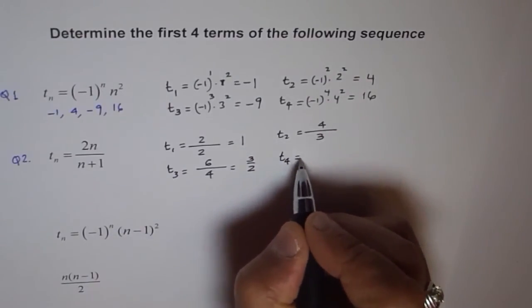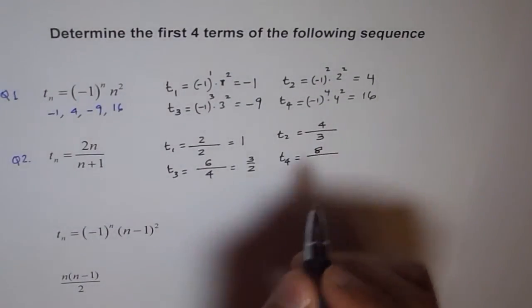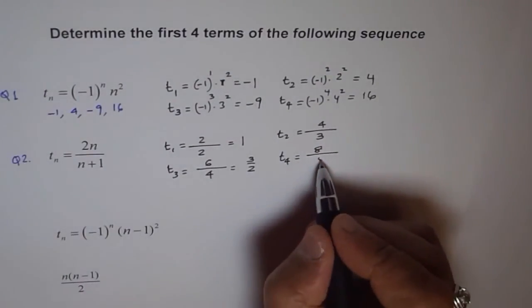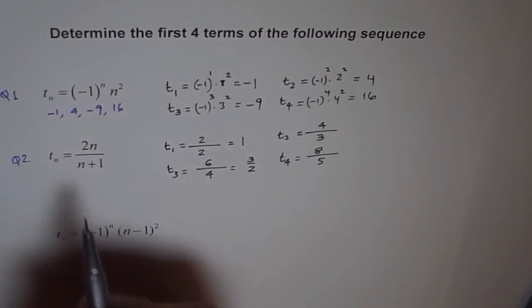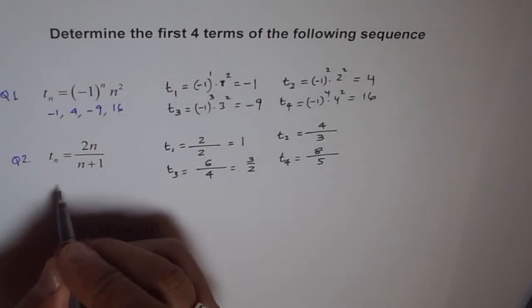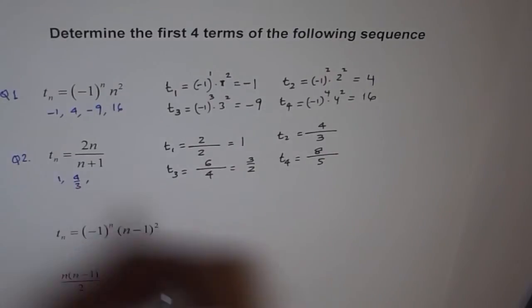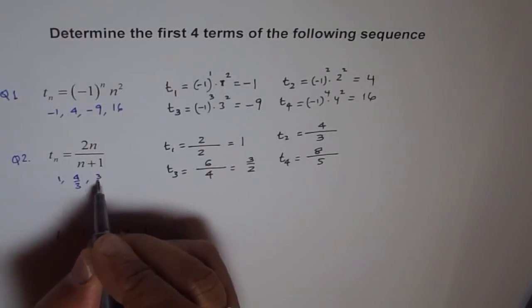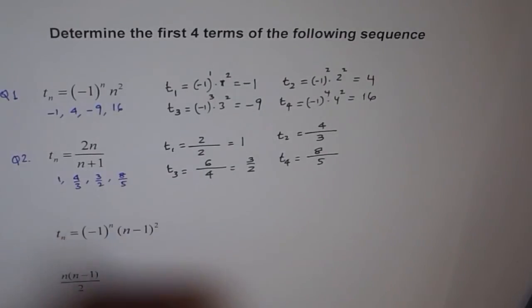And t4 equals to 2 times 4 is 8 and 4 plus 1 is 5. So, these are first 4 terms for the given question. And so, the terms we could write as 1, 4 over 3, 3 over 2 and 8 over 5.